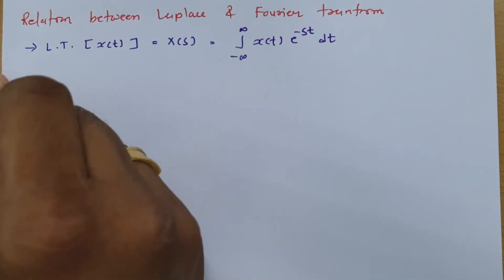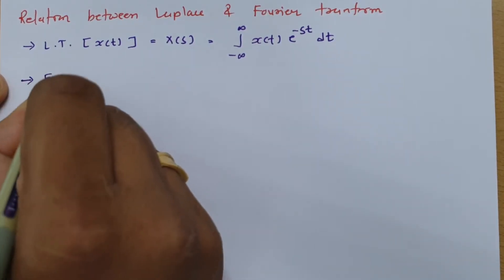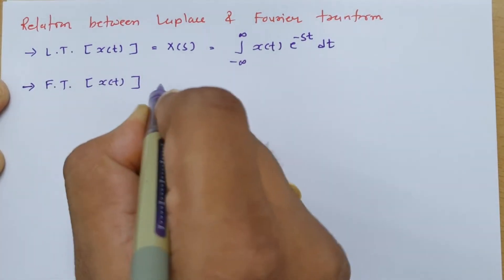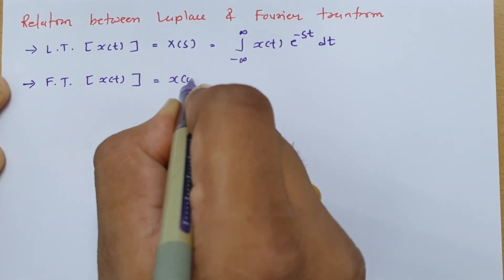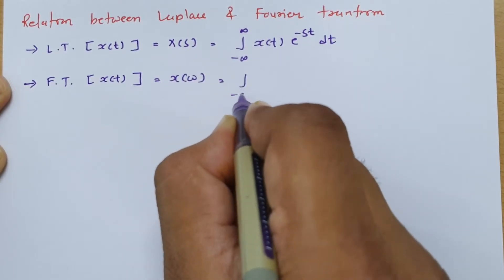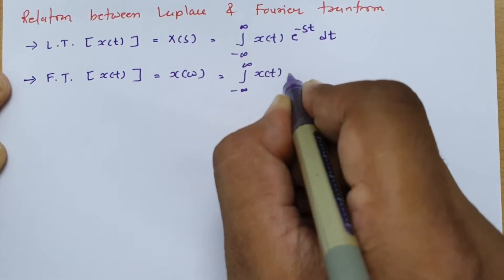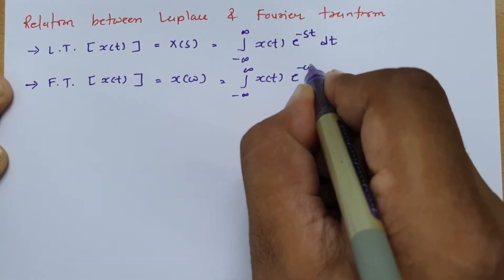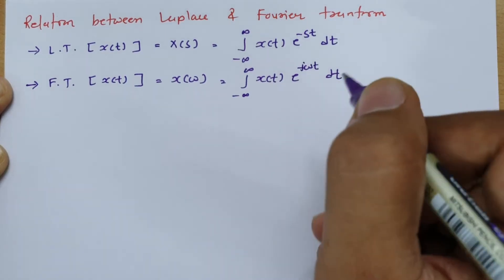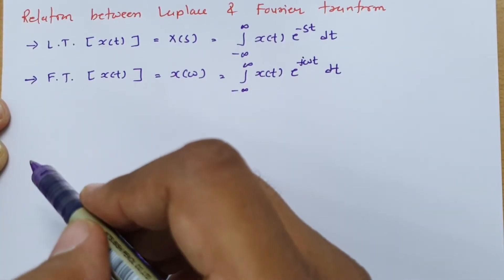If we want the Fourier transform of any signal x(t), that is X(ω), and we can solve it by the integral from minus infinity to infinity of x(t) times e to the power minus jωt, dt. So these are the definitions of both the Laplace transform and the Fourier transform.